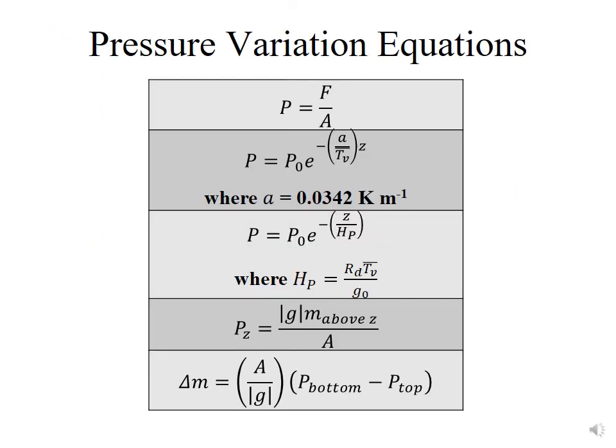We have several equations that we can use for pressure variation. The top one is just pressure equals force divided by area. The second equation is showing the vertical variation of pressure, where some pressure at some altitude is equal to the reference pressure at sea level times the exponent of minus a over tv bar times z. This tv bar is eventually the virtual temperature, but you can consider that to be just a temperature term. a is a constant and z is the height in meters. You can see that this is going to be an exponential decrease in pressure.